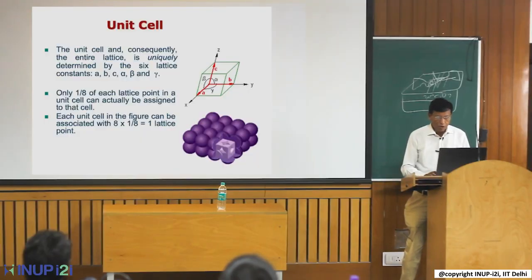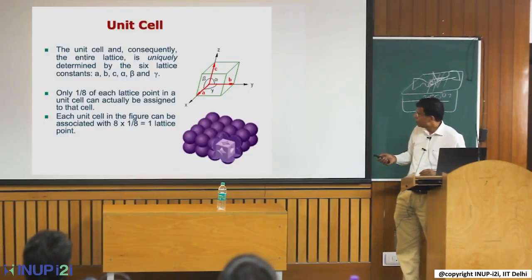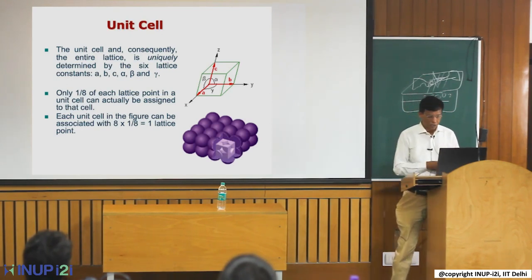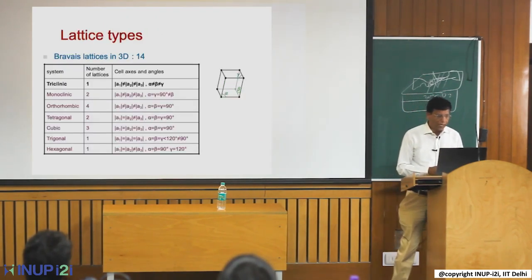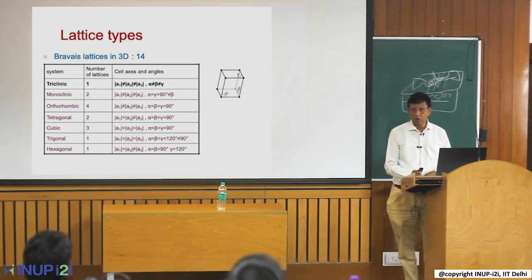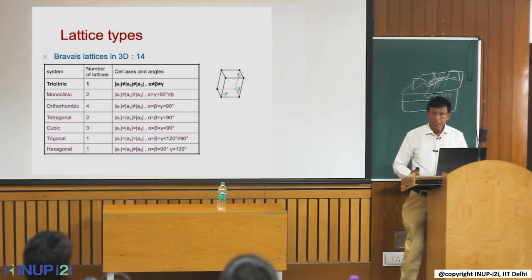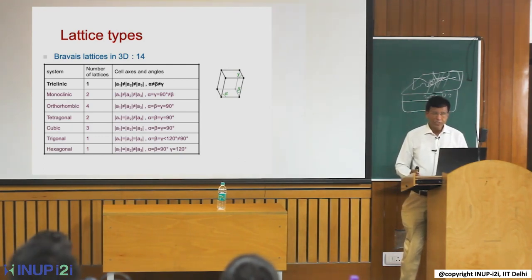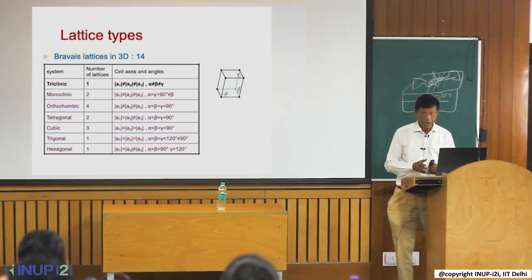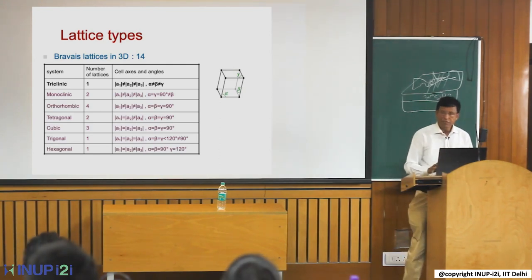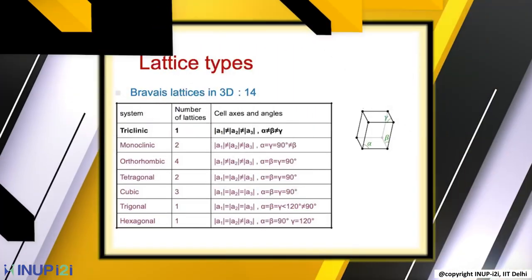Depending on what the values of a, b, c, alpha, beta, and gamma are, materials can have different crystal structures. In the literature, there are only 14 Bravais lattices possible, whatever combination and permutation you do. Understanding this is very important because when you do XRD studies, your material will form in one of these. These details are available in textbooks like Kittel or any solid state physics book.